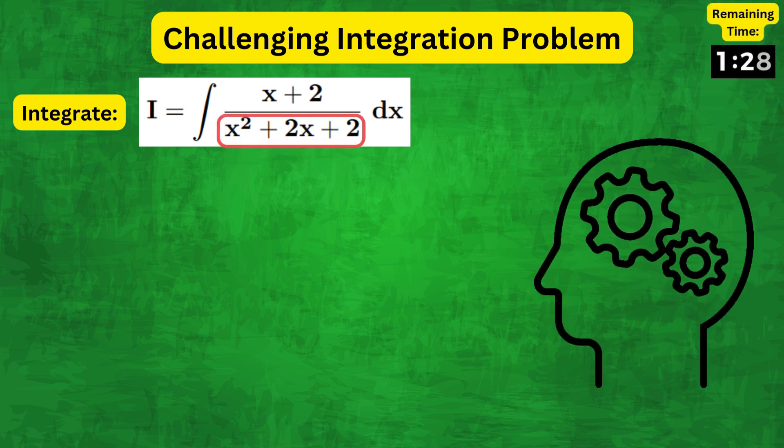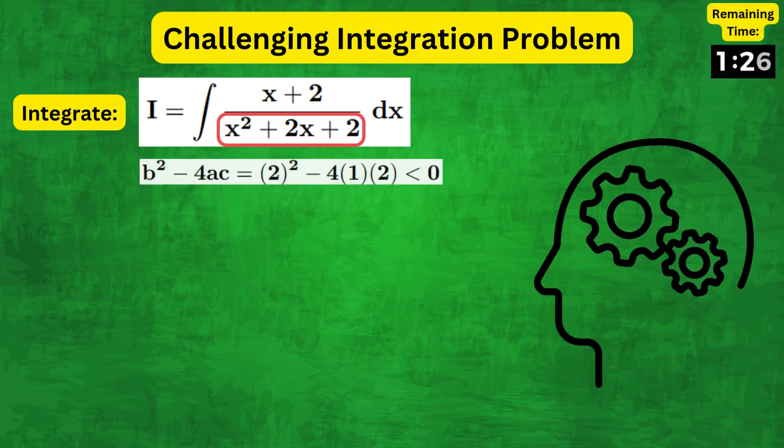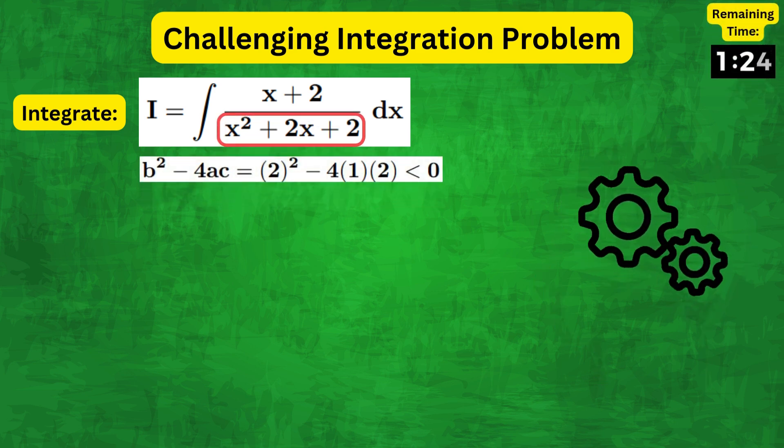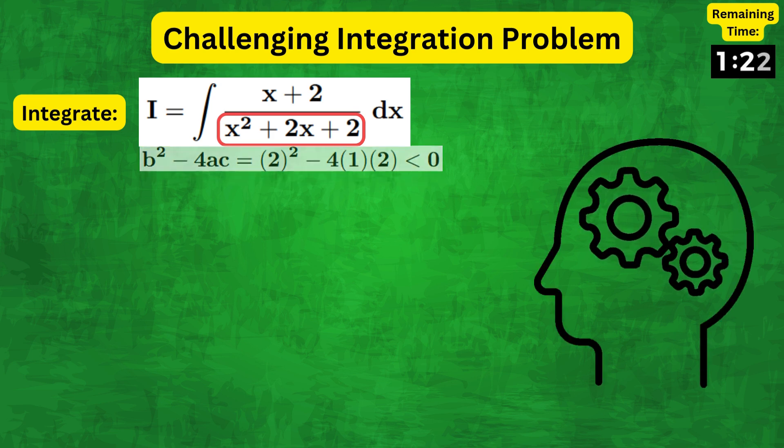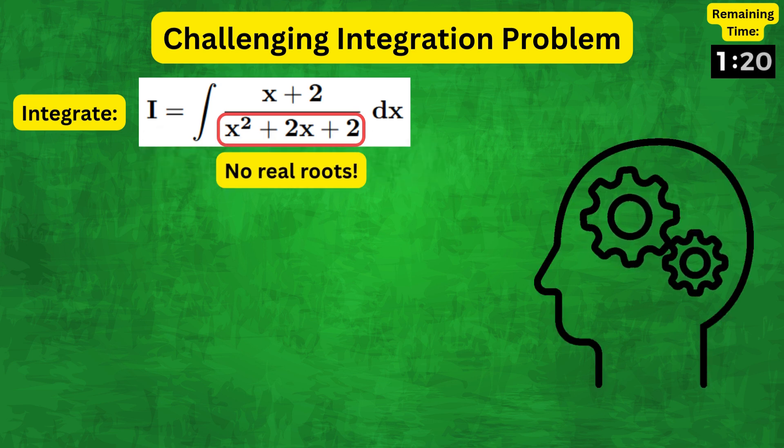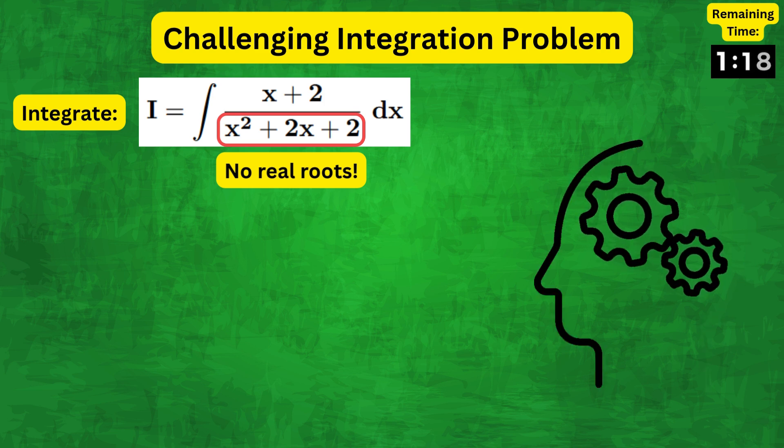The first thing we note is that this quadratic is such that b squared minus 4ac is less than zero, which means that it has no real roots and therefore cannot be factorized easily.